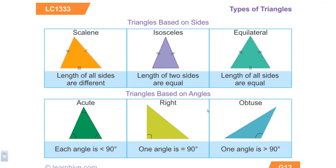Now looking at triangles, we classify triangles two different ways: based on the number of sides and based on the angles. Tri stands for three — we could easily call a triangle a tri-side or something like that.